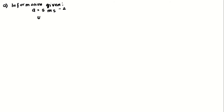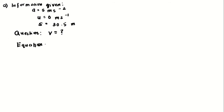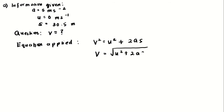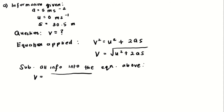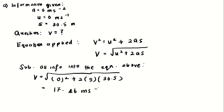Let's start with question a. The information given: a equals five meters per second squared, u equals zero meters per second, and s equals 30.5 meters. We need to find the final velocity v. The equation we apply is v² = u² + 2as. Substituting: v = √(0² + 2 × 5 × 30.5), giving a final velocity of 17.46 meters per second.